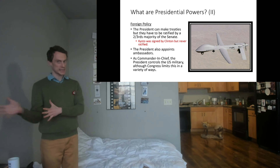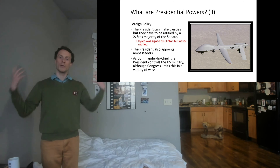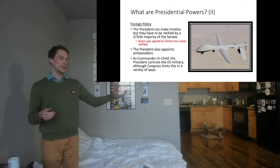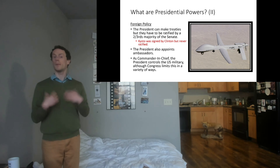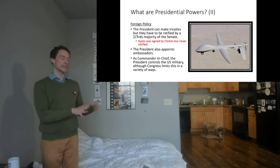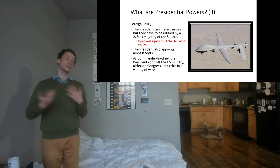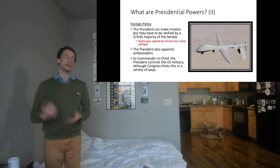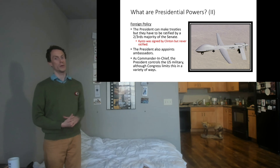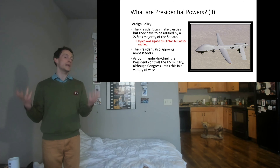A treaty would have meant getting it through the Senate, which was controlled by the Republican Party, and the Paris Agreement probably wouldn't have passed. So the president has a lot of freedom in foreign policy, but if it's a treaty it has to get through the Senate. Appointing ambassadors is another example of the appointments power — instead of appointing heads of domestic agencies, you appoint the head of your relationship with another country.